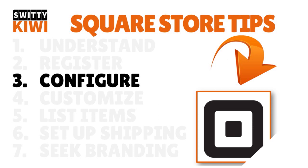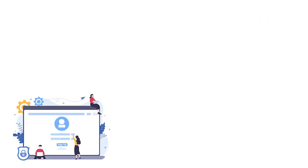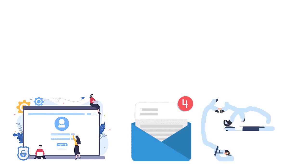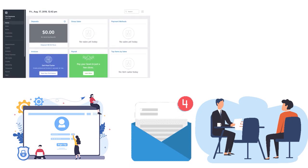The third step is to configure your initial store settings. Square gives you a template to customize and guides users through the process with automated prompts — no technical skills required. They have an easy question-and-answer interview process, and all settings can be changed later through the dashboard. Once done, you'll be taken to your dashboard where you can see the control panel.